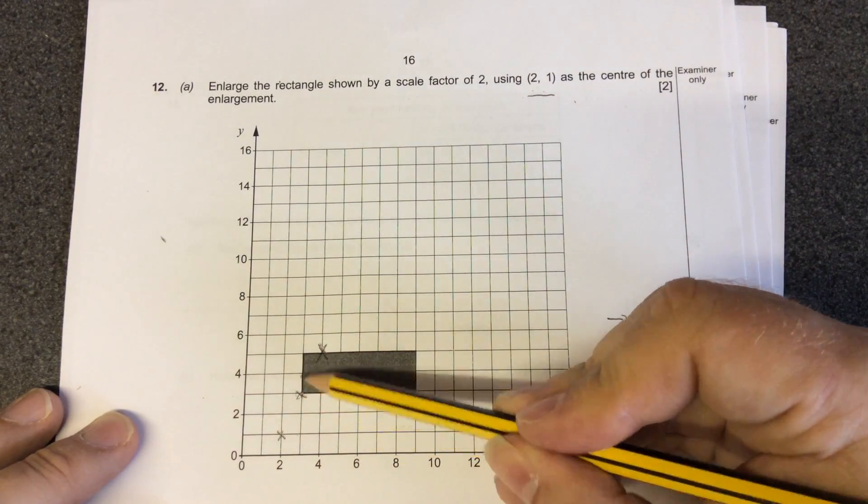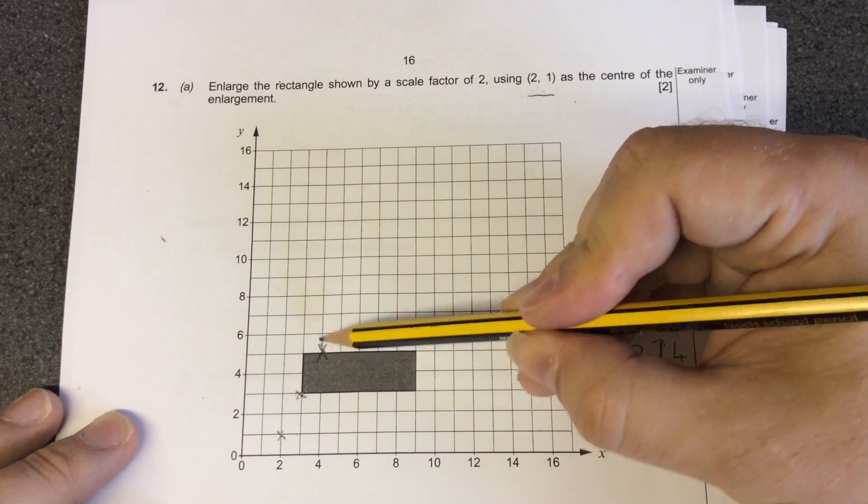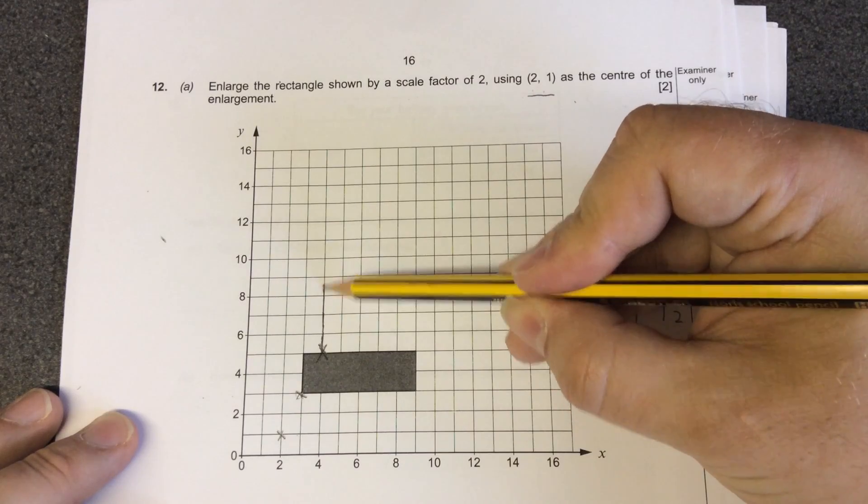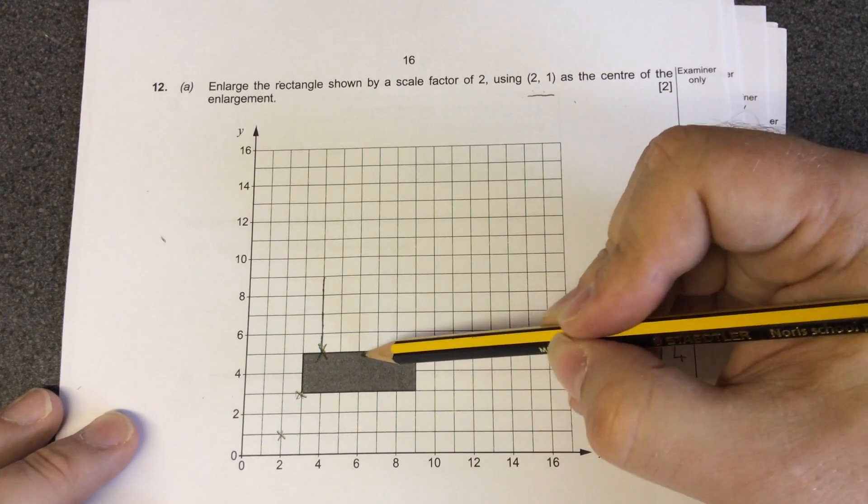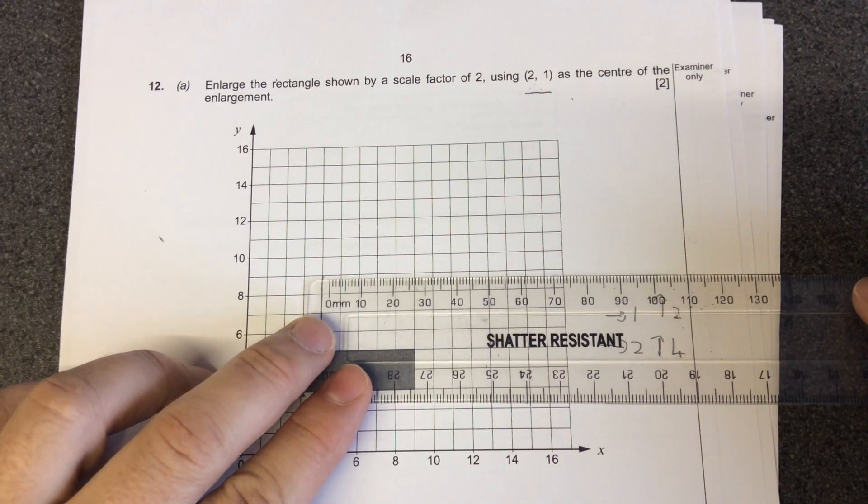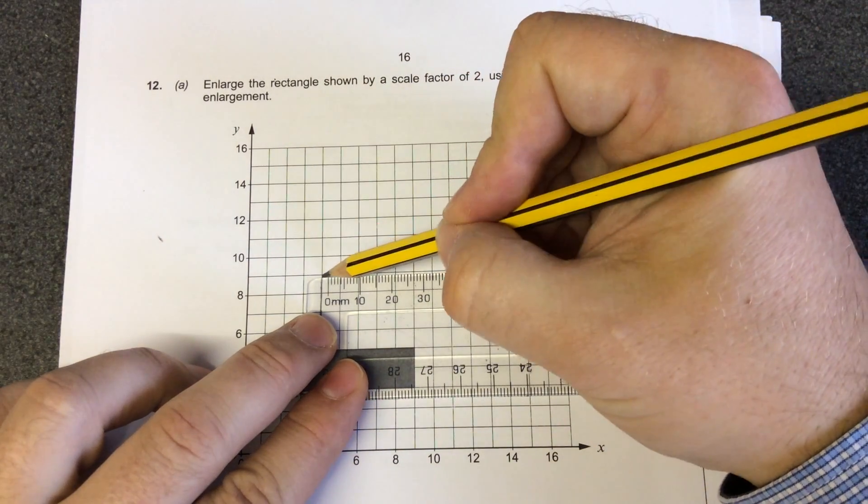So this bottom corner now moves up 2. Instead of going up 2, it goes up 4 squares. So 1, 2, 3, 4, because it's twice as big. Instead of coming across 6 squares, you're now double 6. So double 6 is 12 squares.